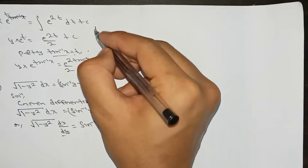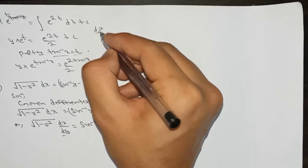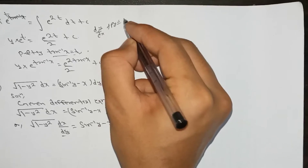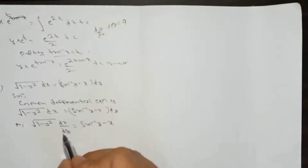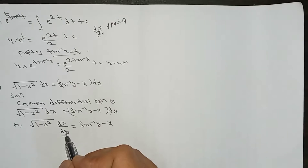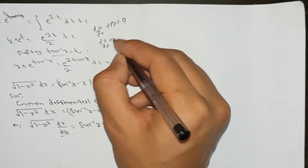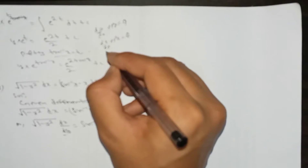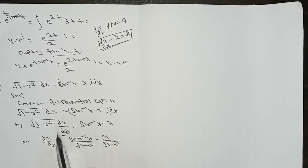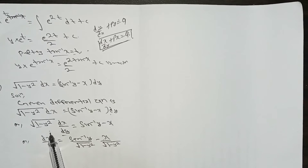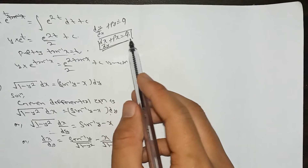We need to change this into the standard linear form. Normally we use dy/dx + Py = Q, but since this equation is in terms of dx/dy, we use the form dx/dy + Px = Q. Dividing through by the root of (1 - y²).